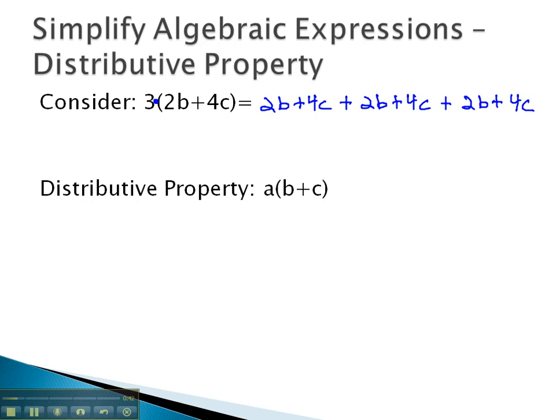Well, we know we can combine like terms, and notice the 2b is like the 2b is like the 2b, and if we add those together, we get a total of 6b's. Similarly, we can add 4c plus 4c plus 4c, which gives us a total of 12c's for our final solution.